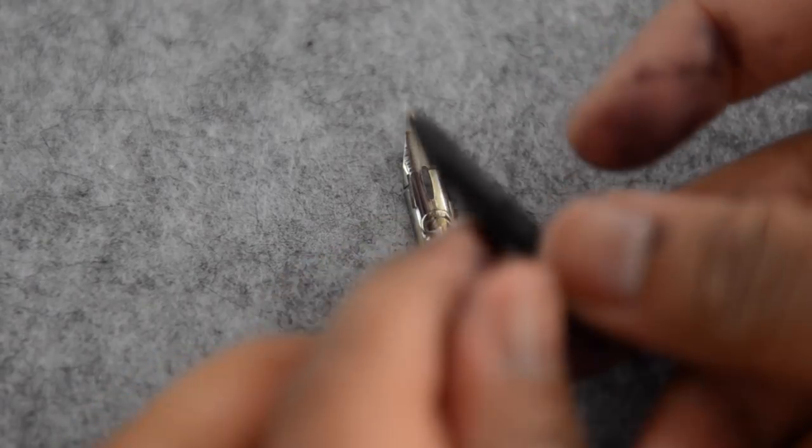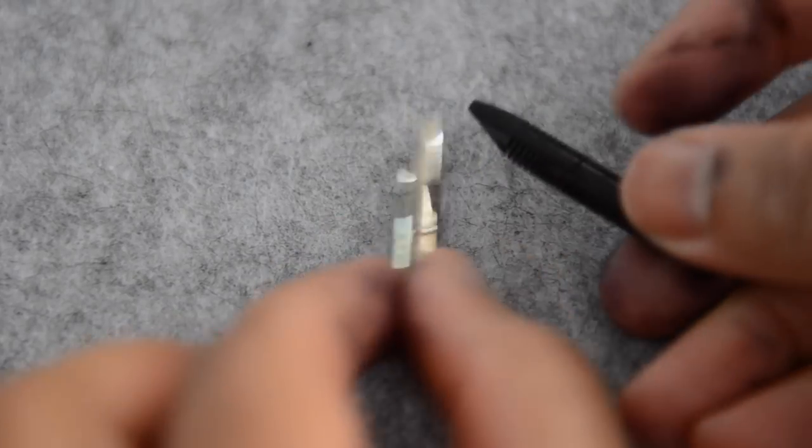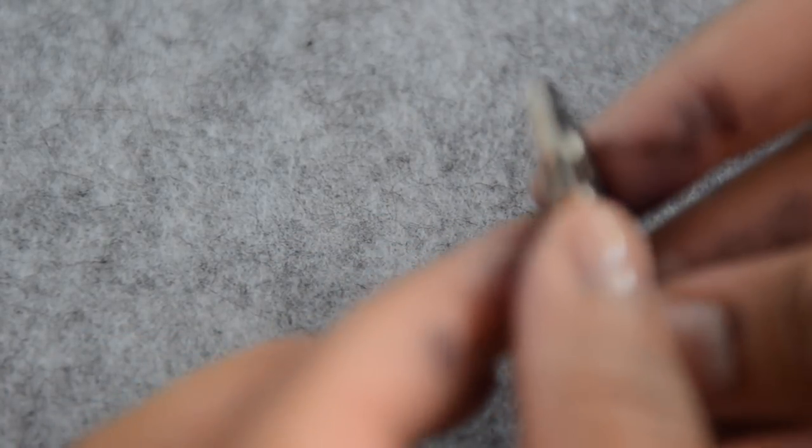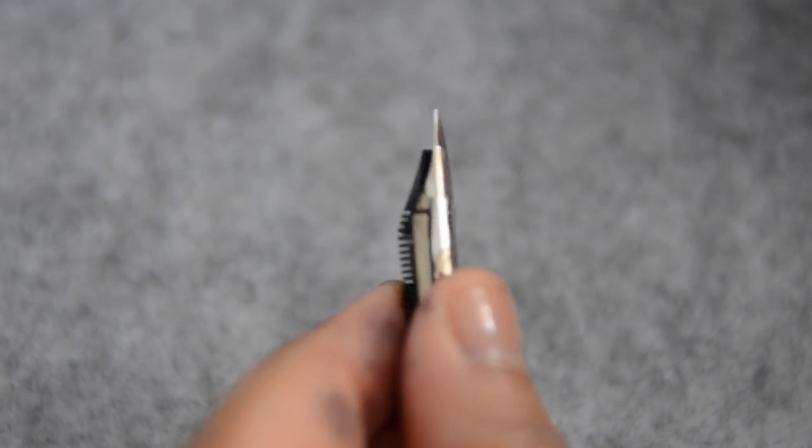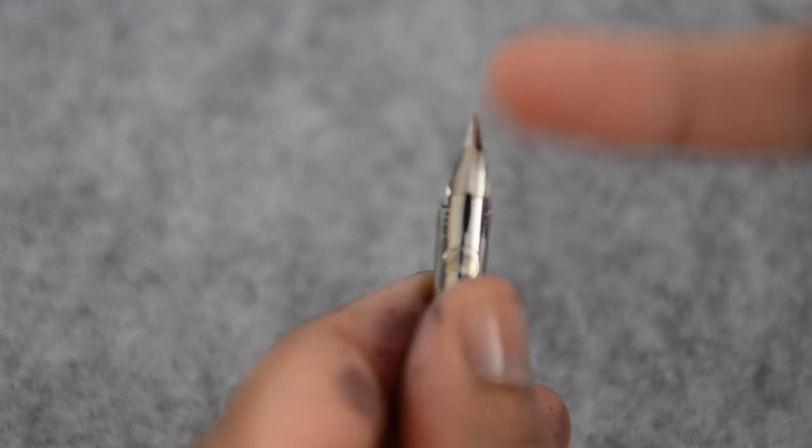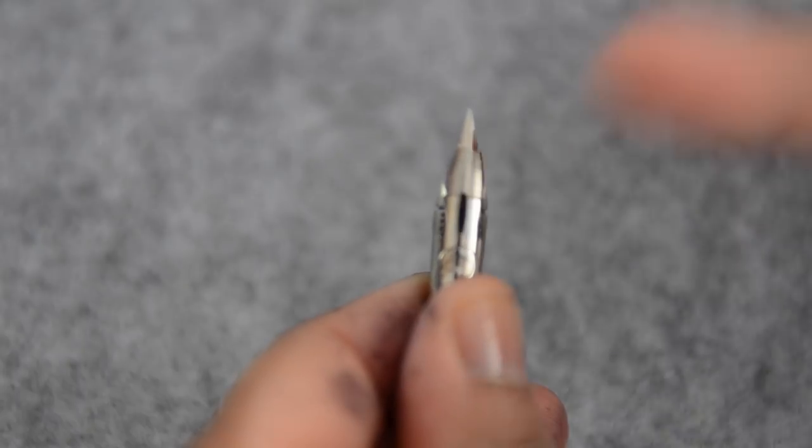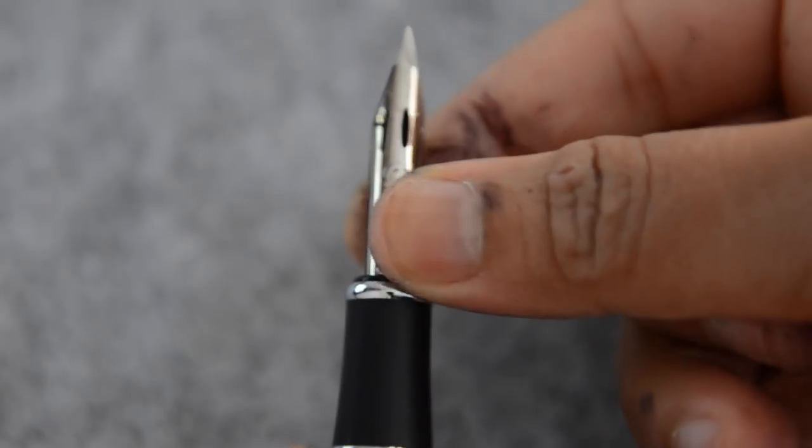The next step is probably the trickiest but it's really not that tricky so you need to put the G-nib on top of the plastic buffer that came with the pen. You need to align the side slits with the first row of slits in the buffer. Once that's aligned you want to push the assembly back into where you pulled it out of in the fountain pen.